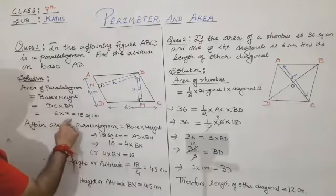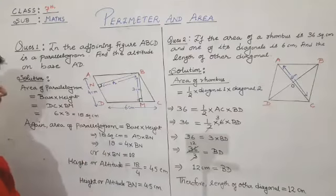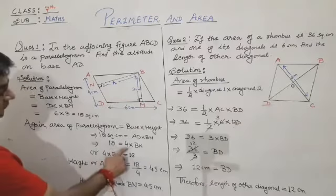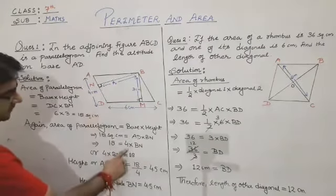But we have already found this area as 18 square centimeters, so 18 square centimeters equals AD into BN. AD equals 4 into BN, that is AD is 4 centimeters.